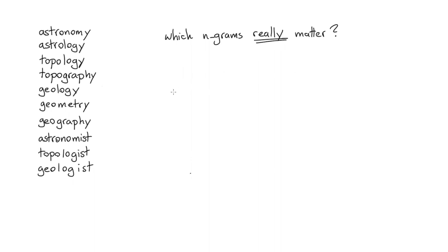So looking at the words on the left I'll just start writing down a couple of subwords. So I've only taken a subset of the n-grams, the first couple of characters for astronomy, astrology and the same thing for topology and topography.